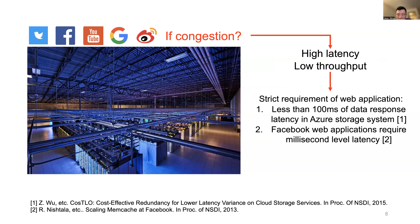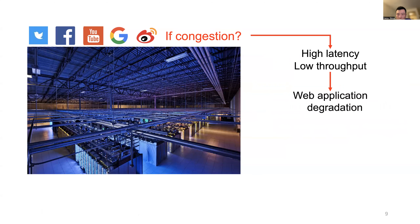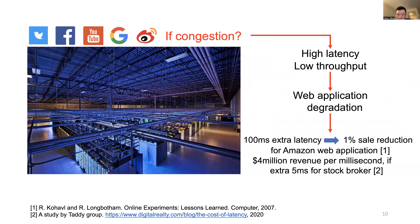Those numbers mean higher latency and lower throughput. Does this performance degradation matter? Yes. Modern web applications always have very strict network traffic requirements. For example, the application deployed in Azure storage system needs a response latency for each request of less than 100 milliseconds. Once there is congestion within the data center, it will degrade the performance of the application, and web application degradation can highly reduce the revenue or sales of the company.